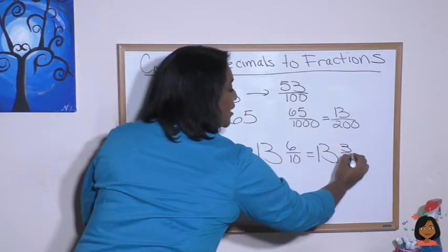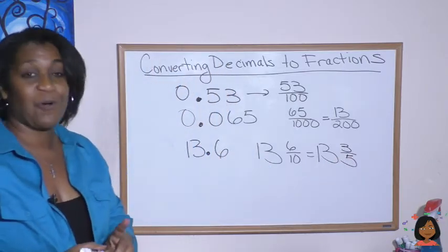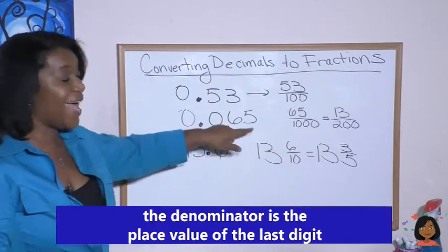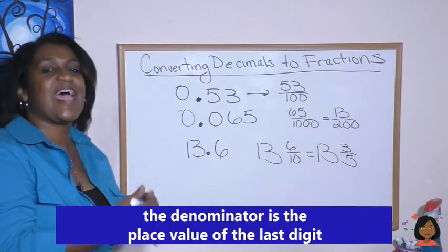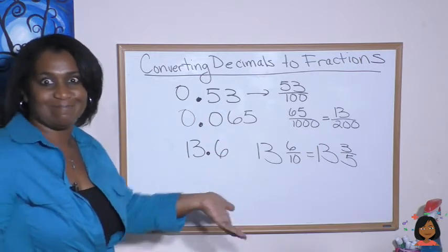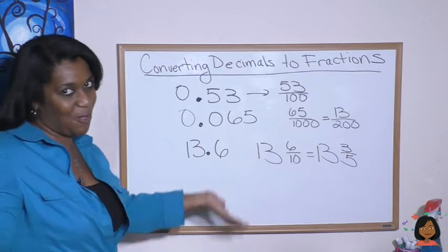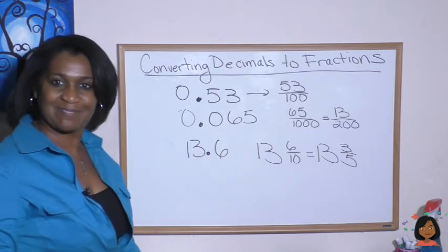It's really that simple with decimals to fractions: you look at the last digit, determine its place value, and turn it into a fraction using that place value. That's Nicole for today—I'll see you next time. Have a good one, bye-bye!